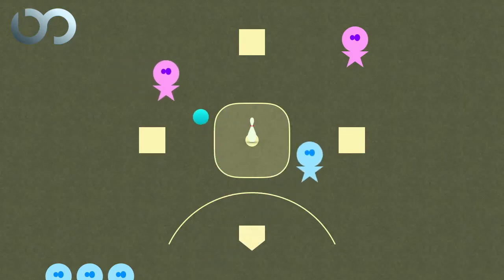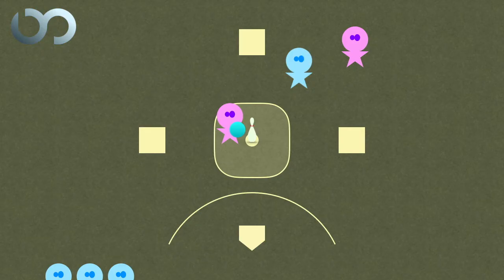If a fielder travels or attacks the pin from inside the pin zone, all base runners are safe and will be awarded an extra base.